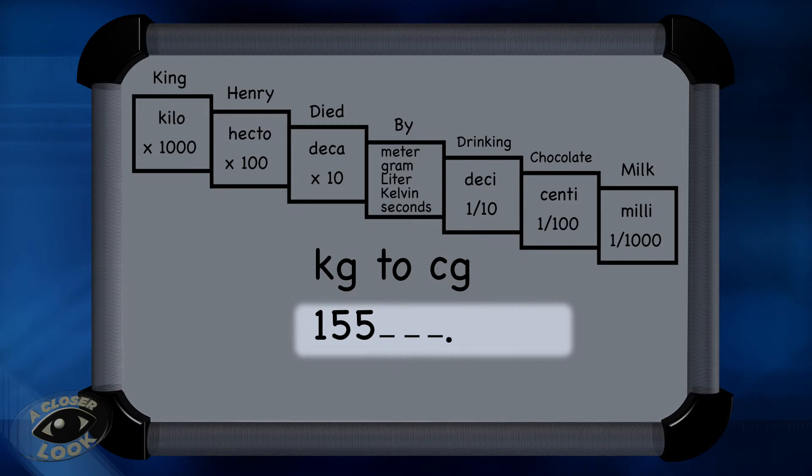And then we do the exact same thing with the decimal: one, two, three, four, five, making dips along the way. And so here is the new decimal place, and we fill in all these dips with zeros.